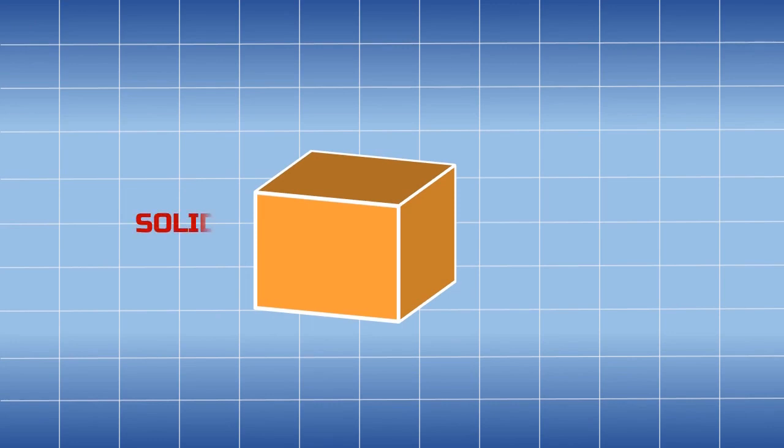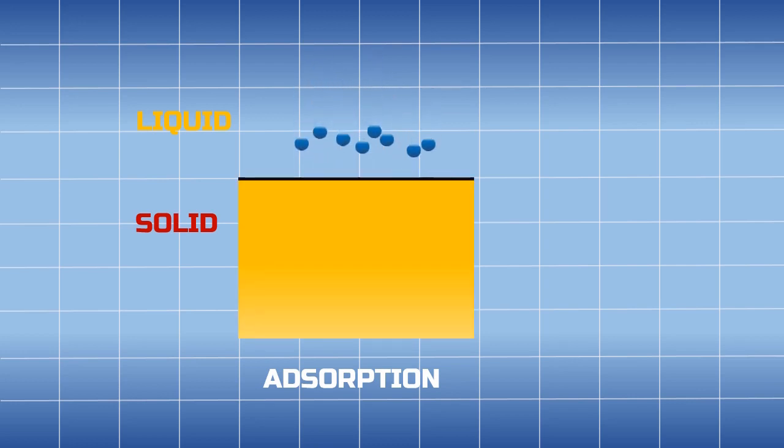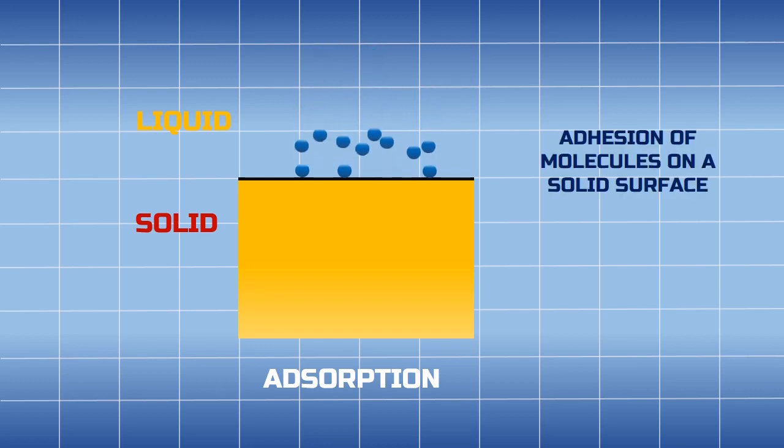Adsorption is the process of addition of atoms, ions, or molecules of a gas, liquid, or dissolved solid onto a surface of a solid. As you can see here, the liquids are falling on the surface of a solid, but they are not able to enter the volume. Instead, they are getting deposited on the surface. The key point is that one substance should be solid, because molecules or atoms will adhere on a solid surface.